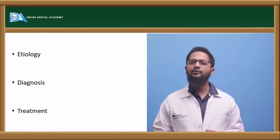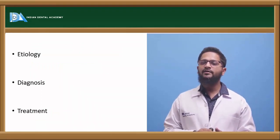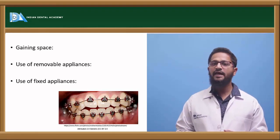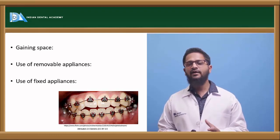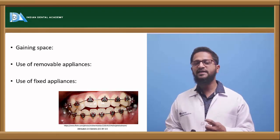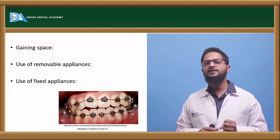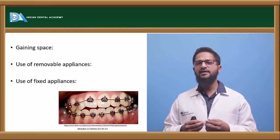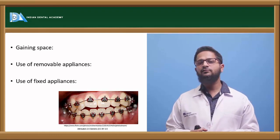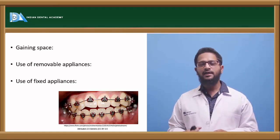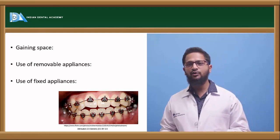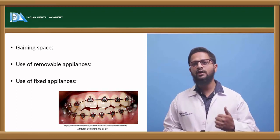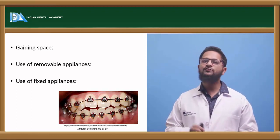Diagnosis requires clinical examination, study model evaluation, and OPG evaluation. What is the treatment for crowding? First we have to gain space — complete model analysis has to be done to determine how space can be gained. This can be done by various methods: if only minor space is required, by doing proximal stripping we can achieve space; with nickel-titanium archwires, arch expansion can also achieve some space. If more space is needed, extractions are required — a single lower incisor extraction for small space, or premolar extraction for more space. Without extraction, distalization of molars can also be done. Removable appliances such as retractors and labial bows can be used, but they are more time consuming and depend on patient cooperation. Fixed appliances are preferred.